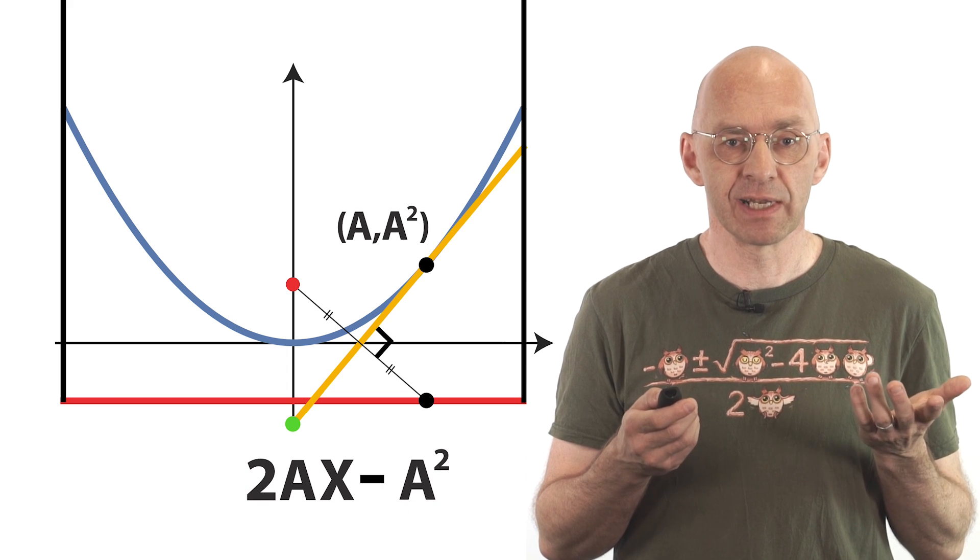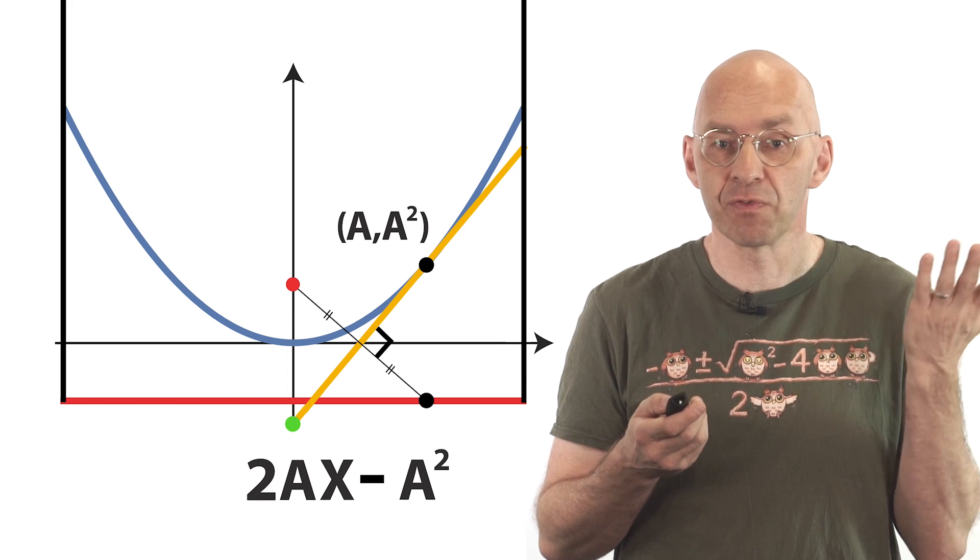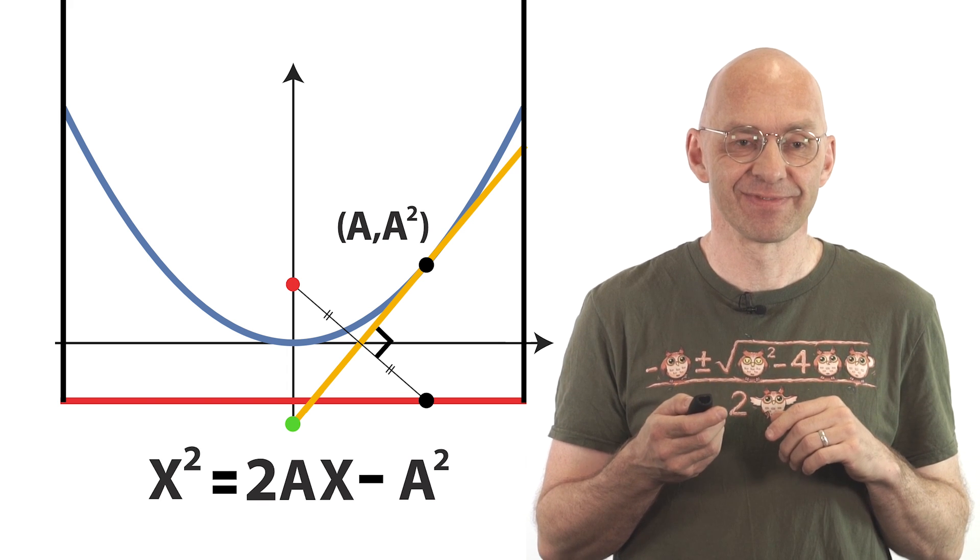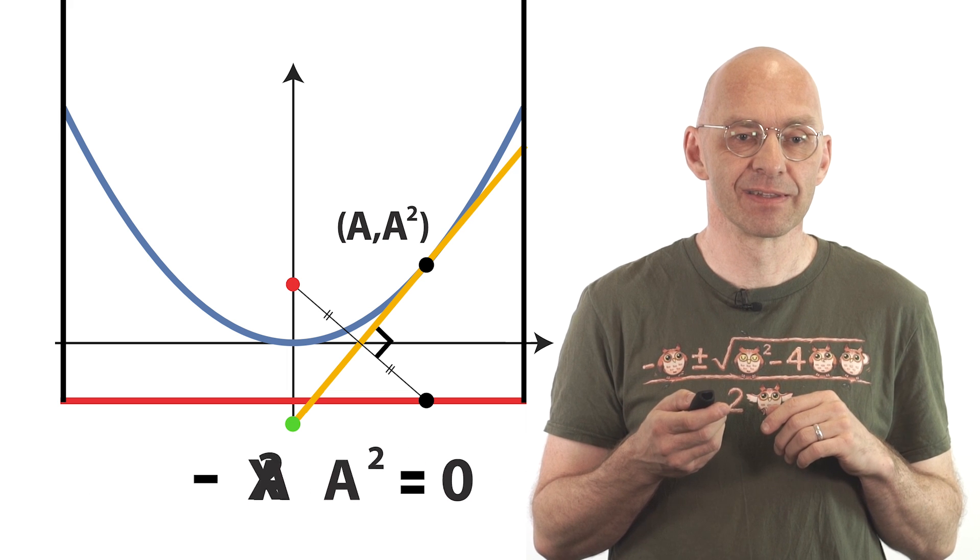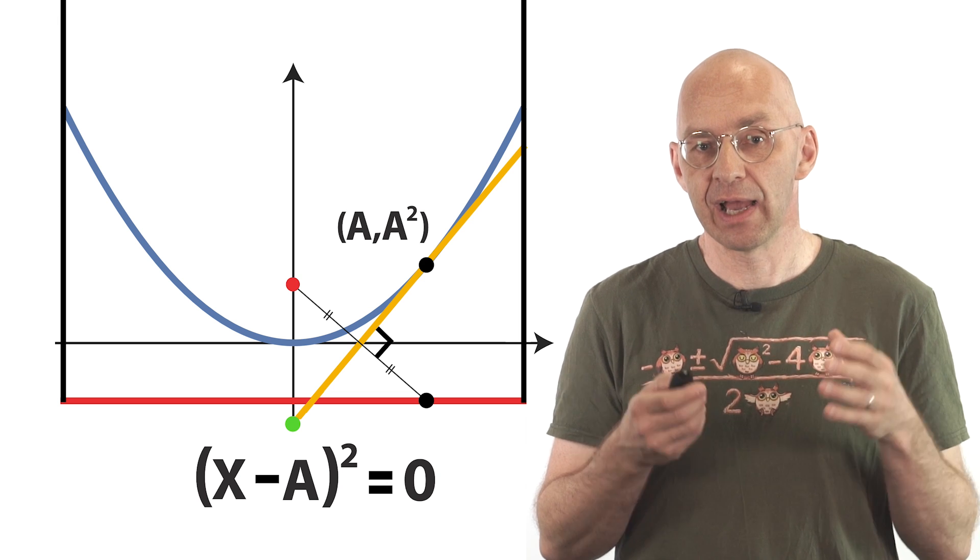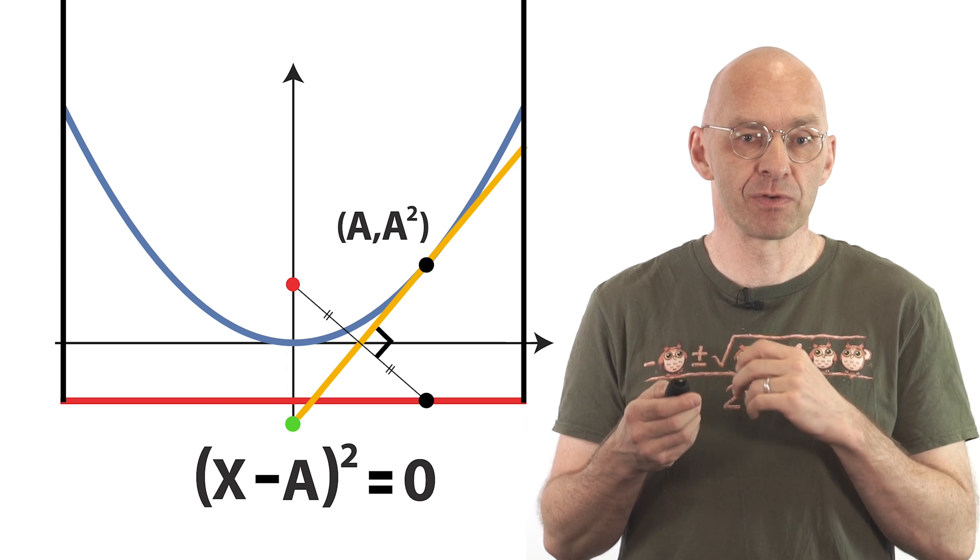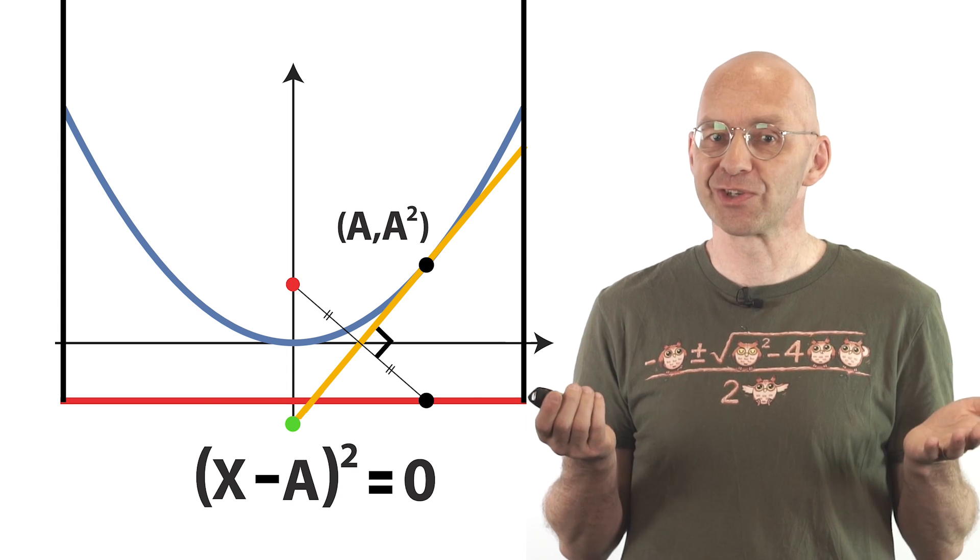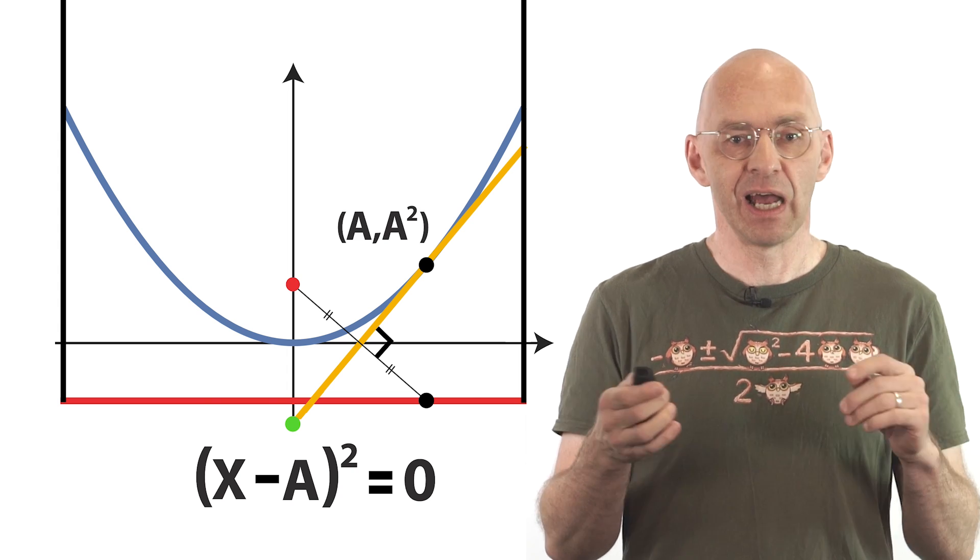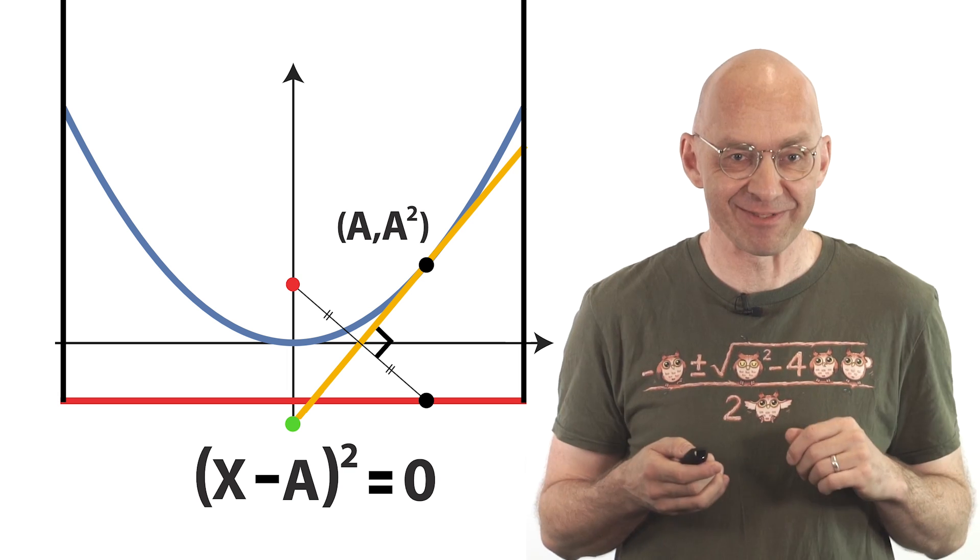And then where does this crease line hit the parabola? Well, we just equate the line with x squared and solve for x. Okay, so there's exactly one solution that x equals a and that means that the crease touches the parabola at exactly the point we predicted. All is good, no loose ends, I'm happy again, we'll all be able to sleep tonight. And that's really it for today.